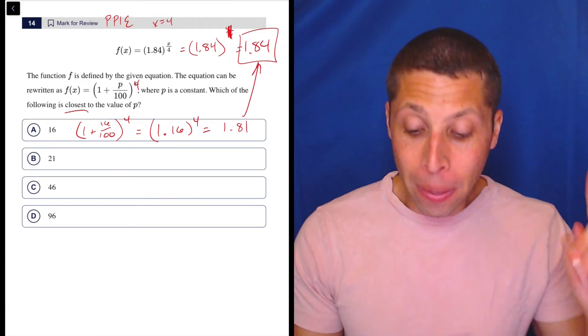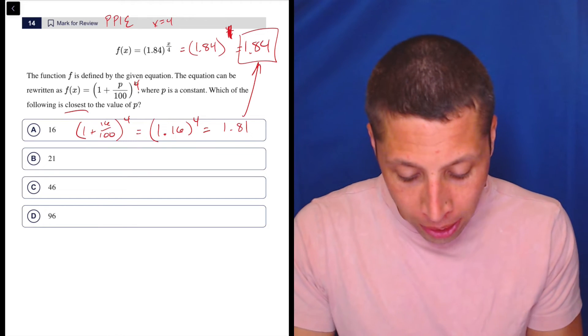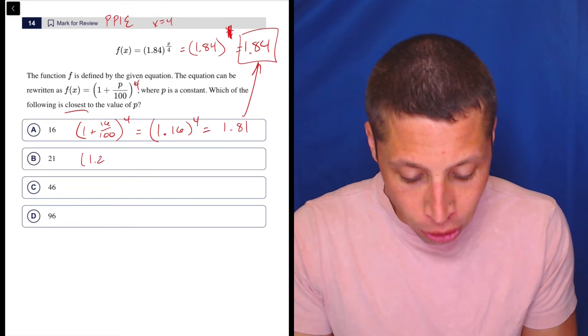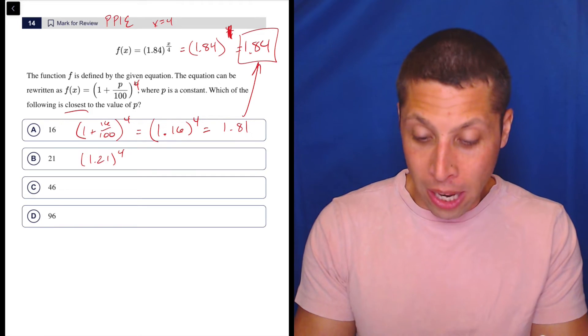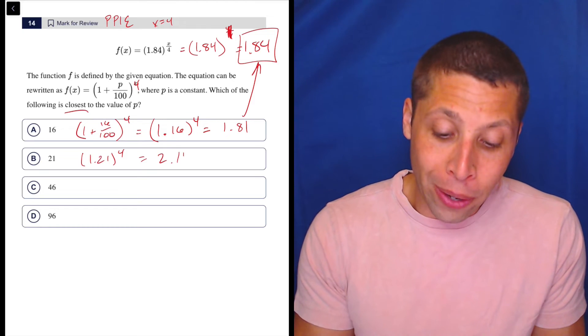Not quite the same, but again, remember, we just need to get close. So let's just compare, right? So this would be 1.21 to the fourth. So 1.21 to the fourth is 2.14.